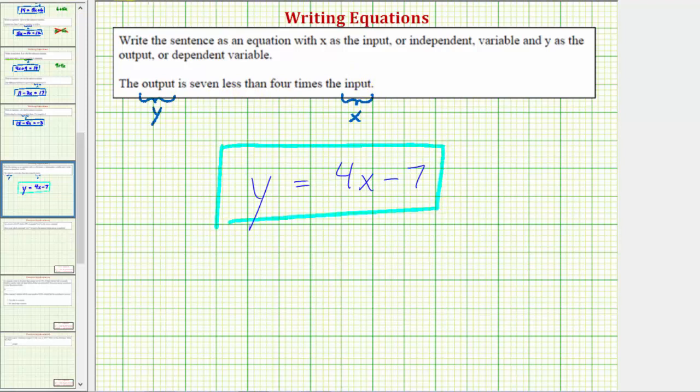Before we go though, I do want to talk more about the expression for seven less than four times x. It might be tempting to write the expression as seven minus four x, but this is not correct, because this means four times x less than seven, and we want the expression seven less than four times x.